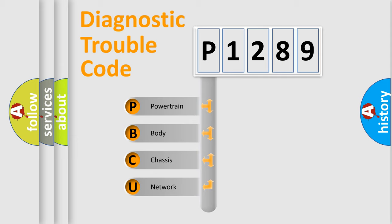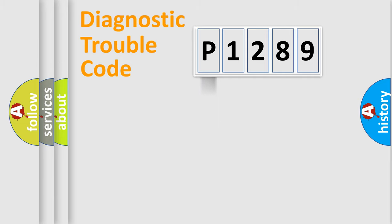We divide the electric system of automobiles into four basic units: Powertrain, Body, Chassis, and Network. This distribution is defined in the first character code.